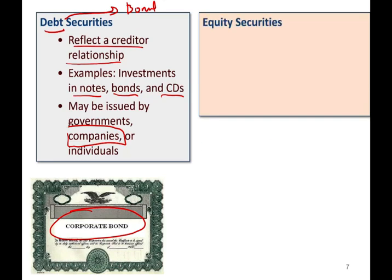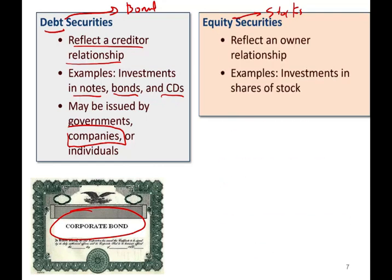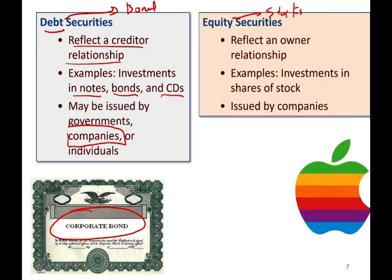In contrast to debt investments, we have equity investments. When we say equity investments, think of stocks. Stocks represent an ownership relationship — you own the stocks. An example will be investments in stocks issued by companies. Governments don't issue stocks; they're issued by companies. Think about Apple and Microsoft.